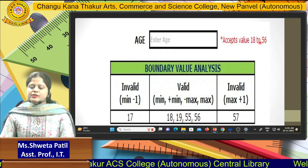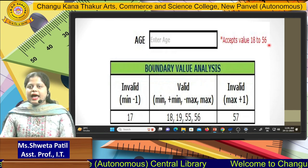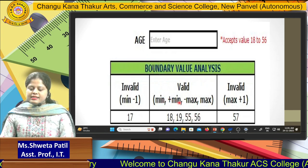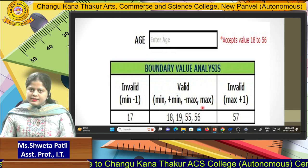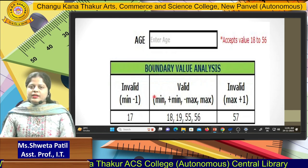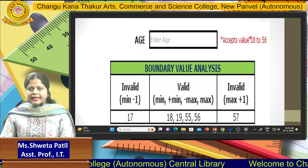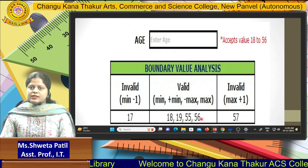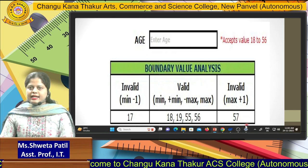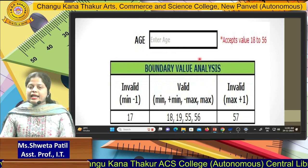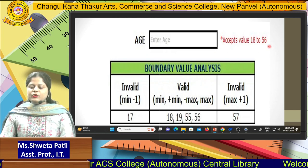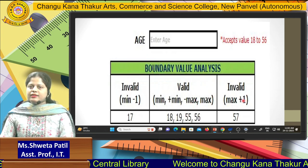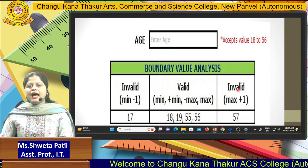The maximum value is 56, so 56 is one test case and below 56 is 55 — that is maximum minus. So we get four valid test cases: minimum (18), minimum plus (19), maximum minus (55), and maximum (56). For invalid cases: minimum minus means 17, and above the maximum 56, one test case is 57. So valid cases are those four and the two invalid cases are 17 and 57. BVA always works with both valid and invalid cases.